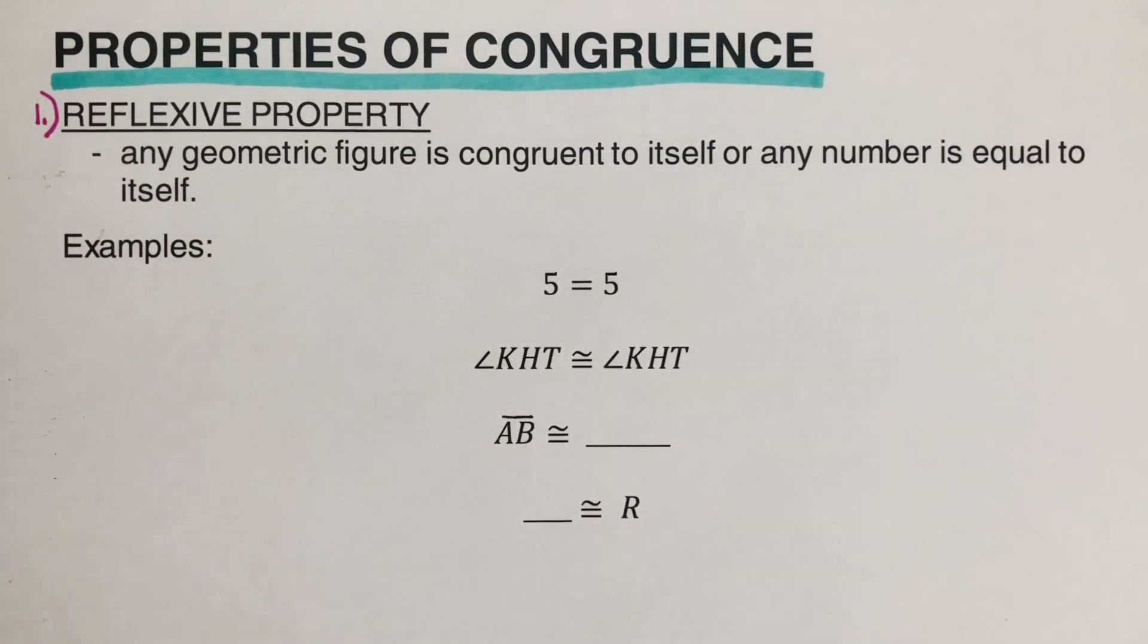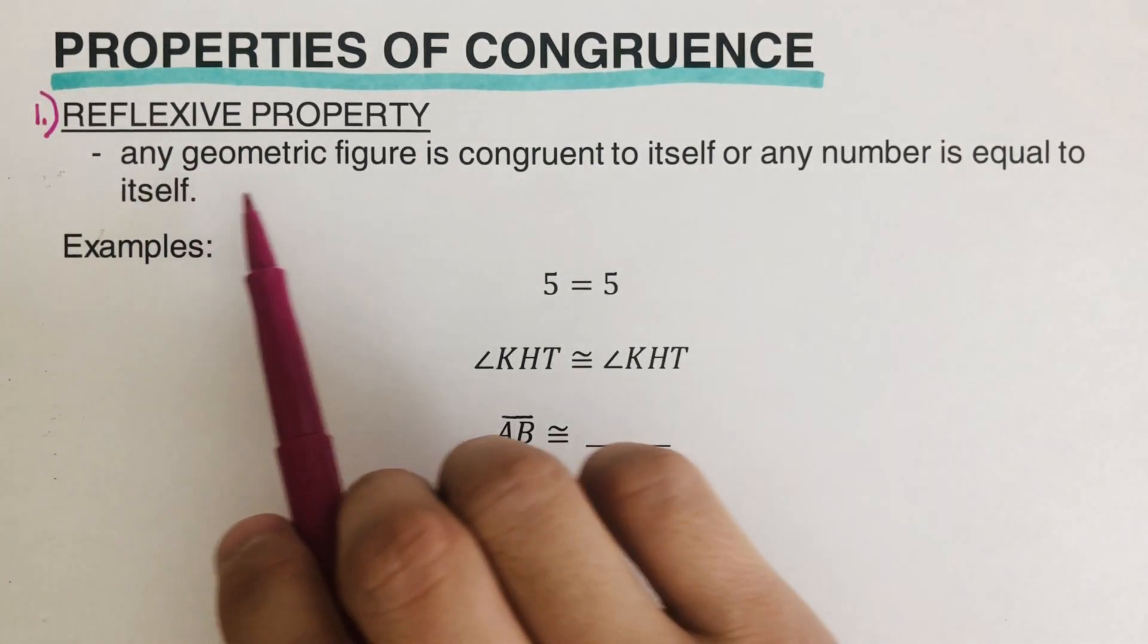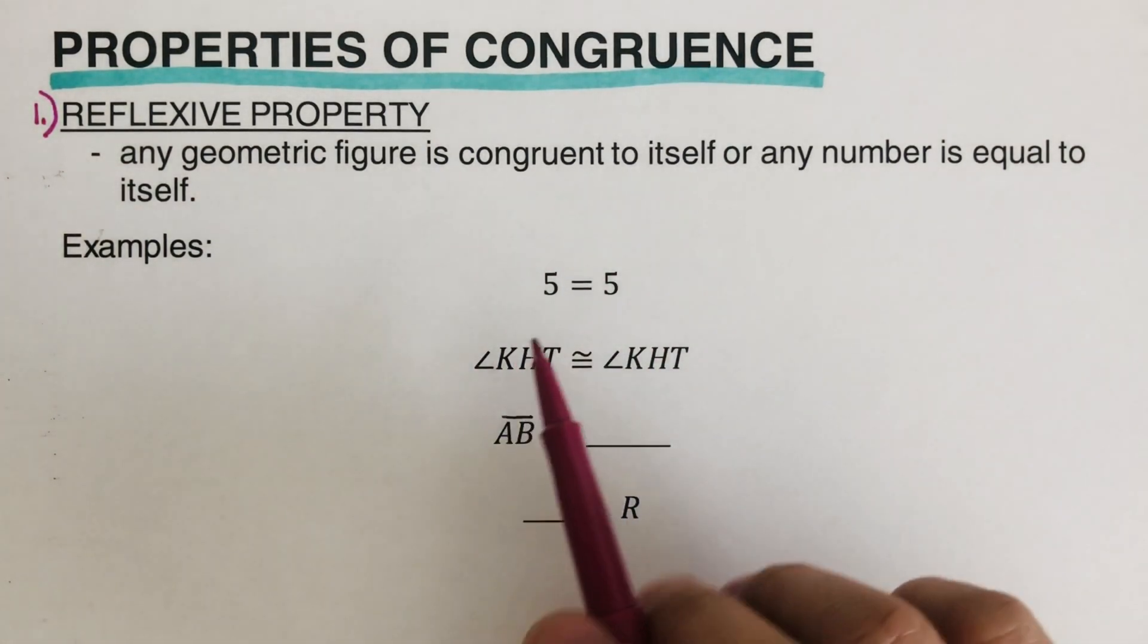We have the reflexive property. By the way, these properties are going to be used when we prove geometric statements. So let's go over these three properties. So let's start with the reflexive property. Any geometric figure is congruent to itself or any number is equal to itself. For example,